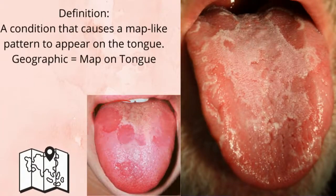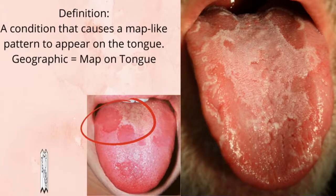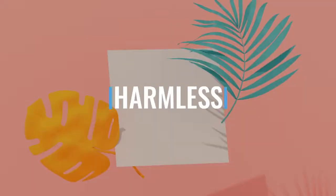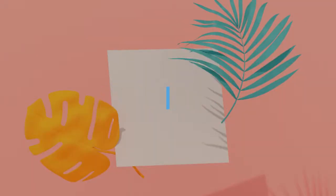From the name, you can state the definition: geographic tongue looks just like a map on the dorsal surface of your tongue. It's completely harmless and not contagious at all.